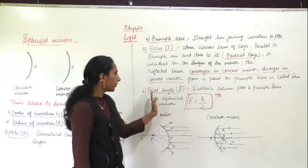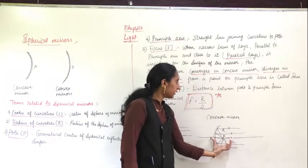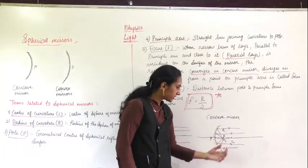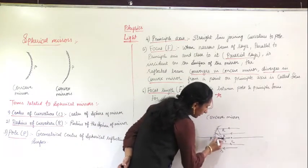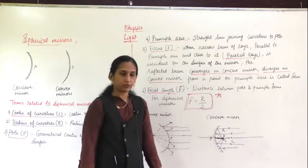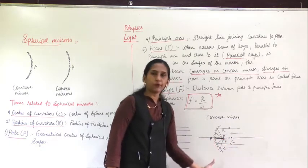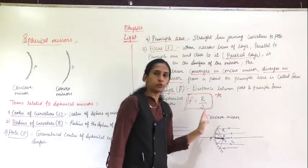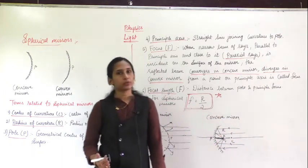The focal length is the distance between the pole and the principal focus. The focus is located at half the radius of curvature. So the formula for focal length is F equal to R divided by 2, where R is the radius of curvature. This formula is very important to find the focal length of mirrors.